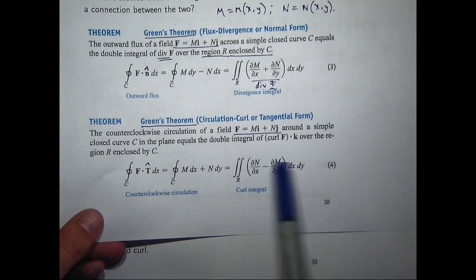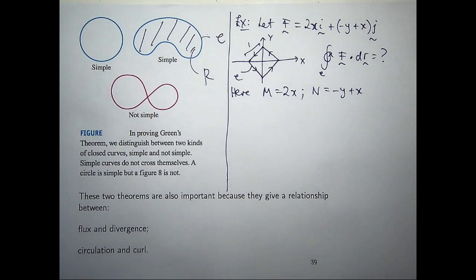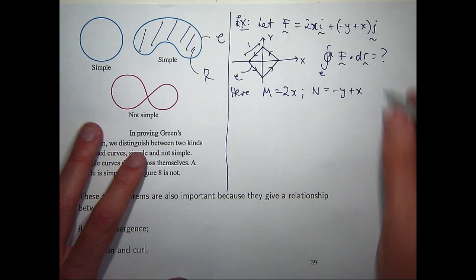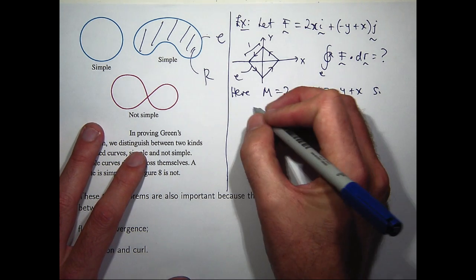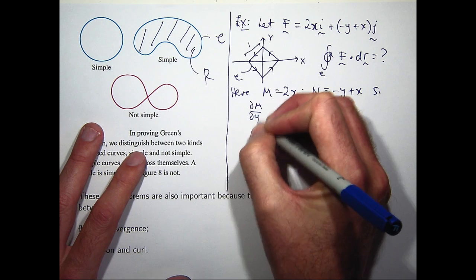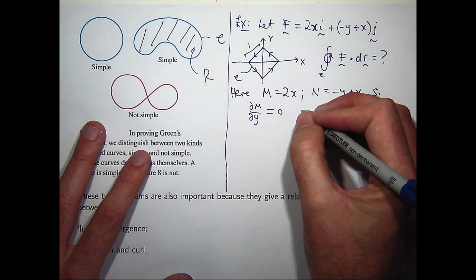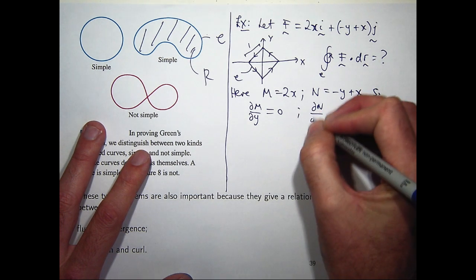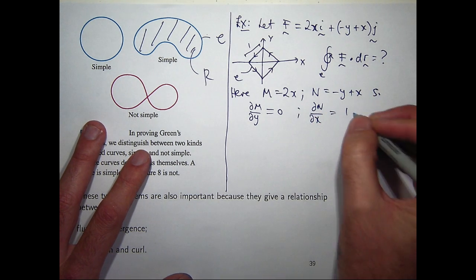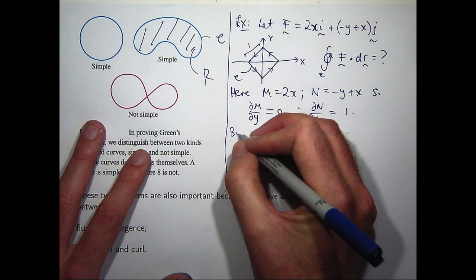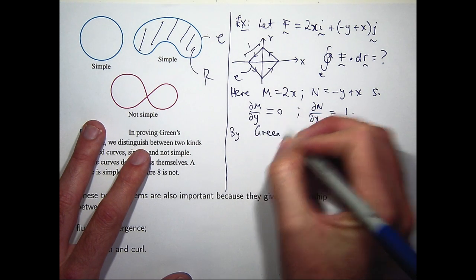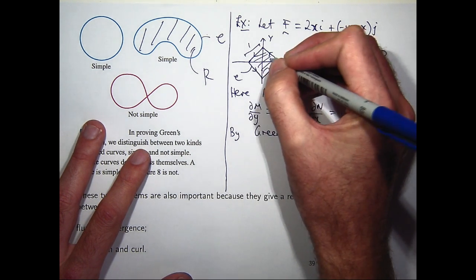Okay, dM/dy is going to be something, is going to be zero. dN/dx is going to be positive one. So, our region, our sort of internal region is there.